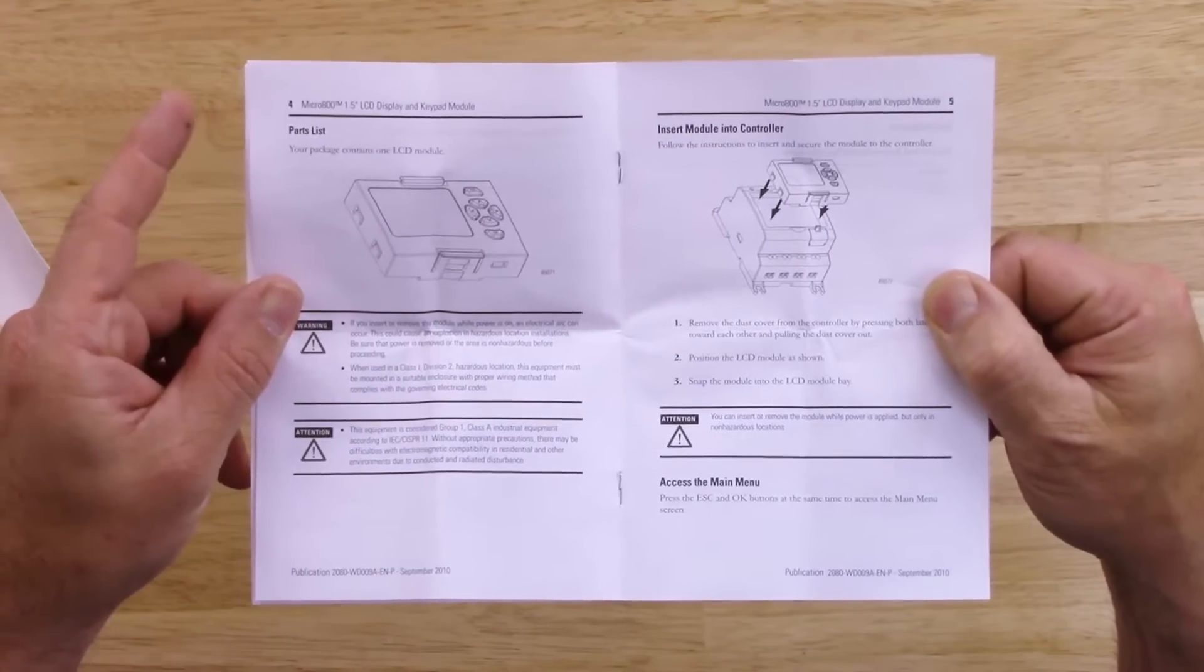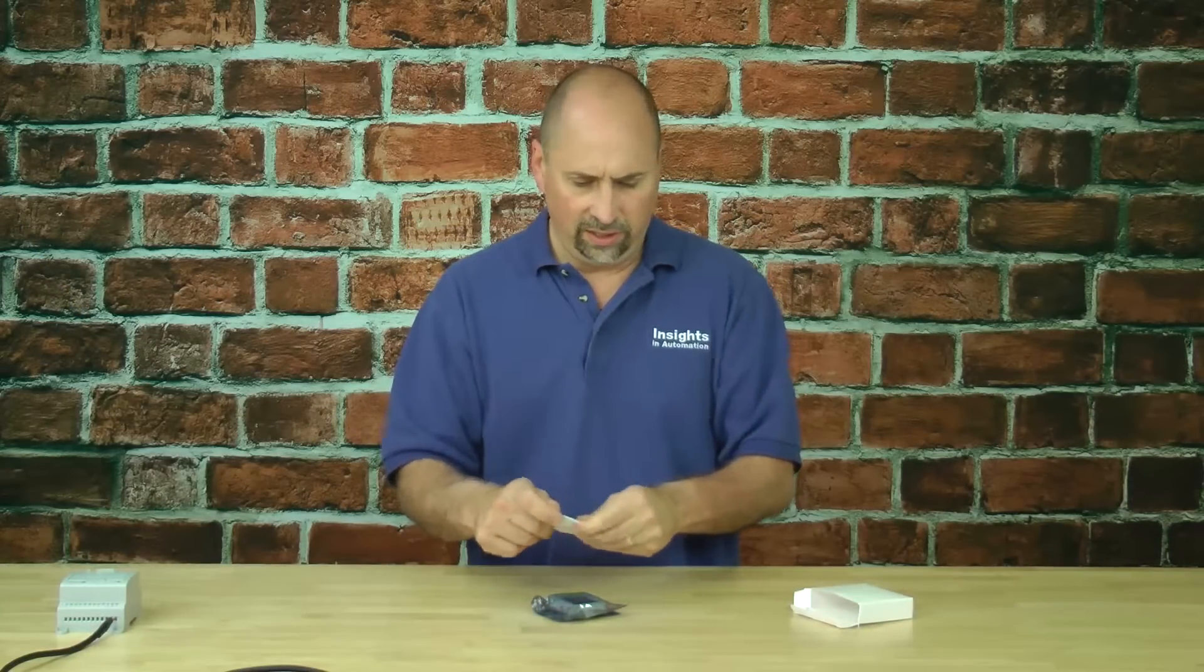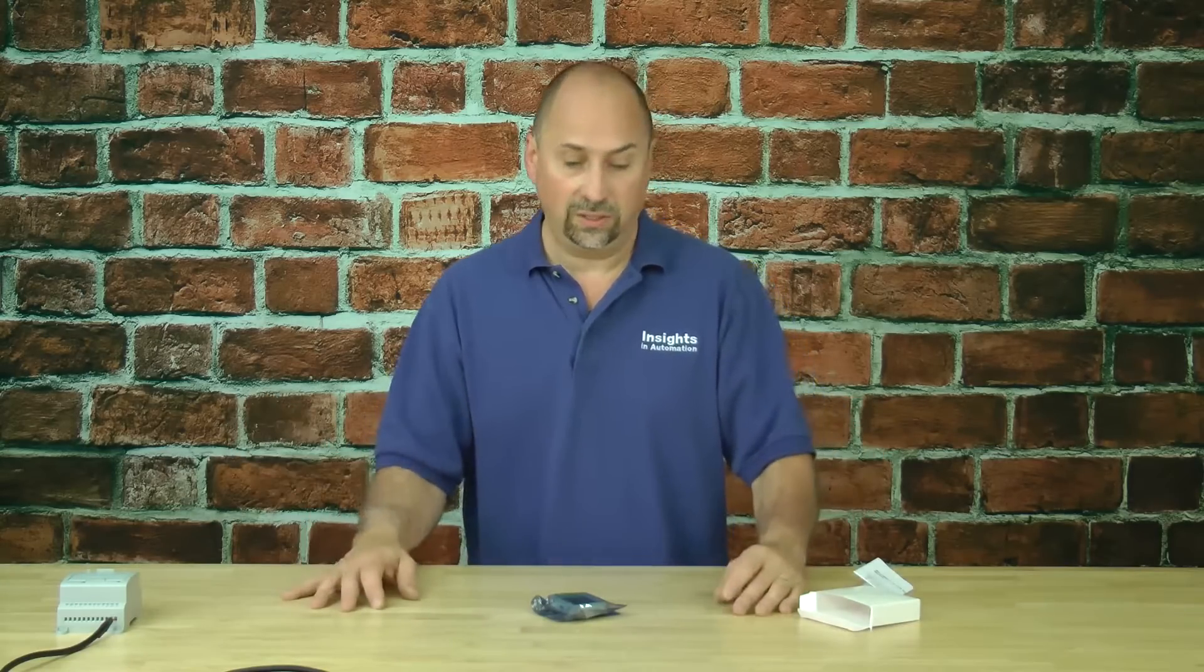We'll go ahead and plug ours in with power off anyways, but the only thing it does say in there is that if you're in a Class 1, Div 2, kind of hazardous location, you don't want to be unplugging and plugging this in because you can get arcs, and arcs can cause an explosion if there's explosive gases around.